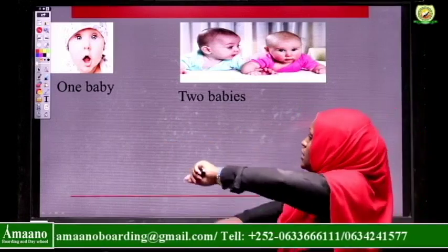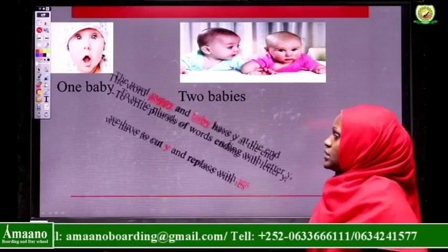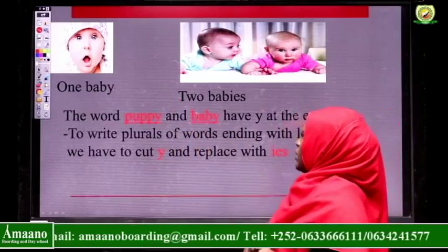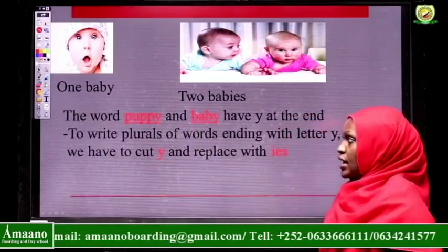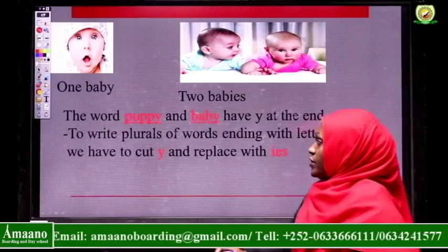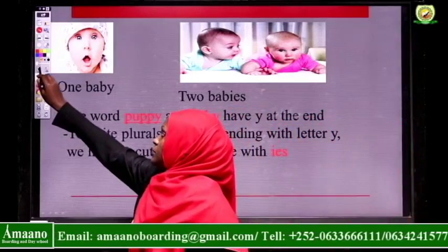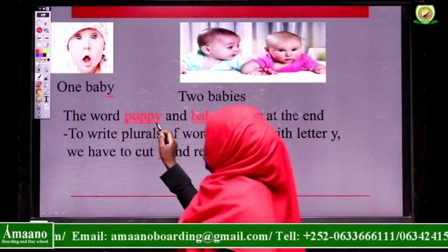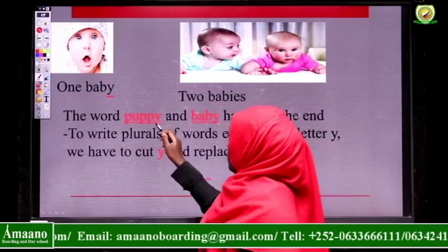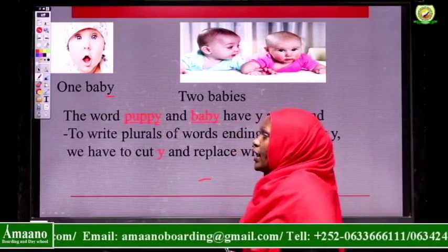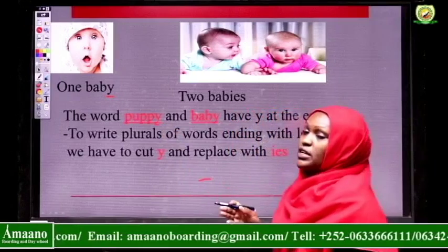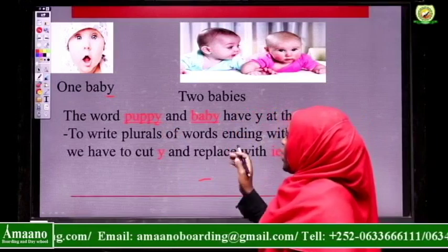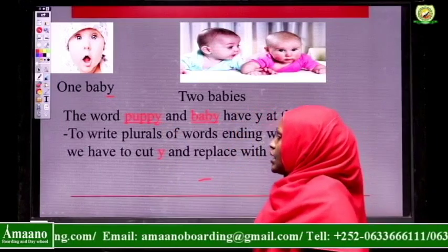Now, how do we write this? What helps us to write the plural of that word? The words puppy and baby have Y at the end. If you check very well, you find that we have Y at the end — for puppy and for baby. So for us to write the plural of this word, what do we do?